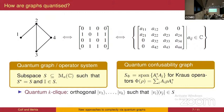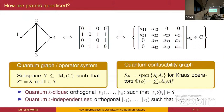Just as for classical graphs, you can look at cliques and independent sets of quantum graphs. A clique is a subset of vectors such that the corresponding ket-bras of those vectors are contained in the operator system. An independent set is a set of vectors where the corresponding ket-bras are orthogonal to the operator system.